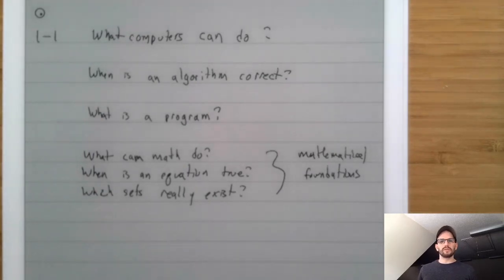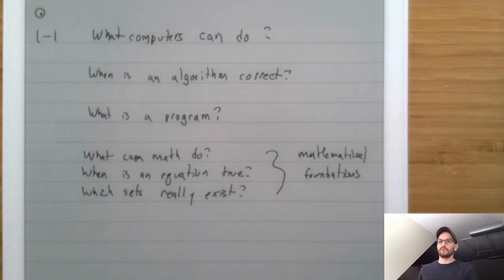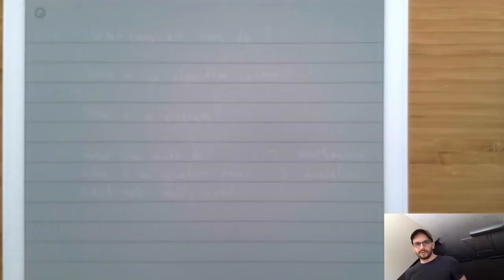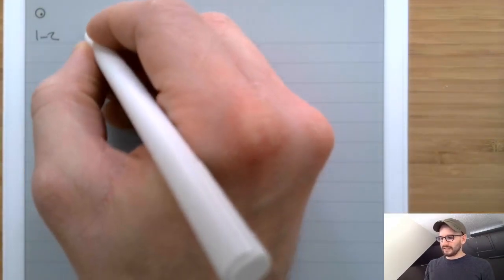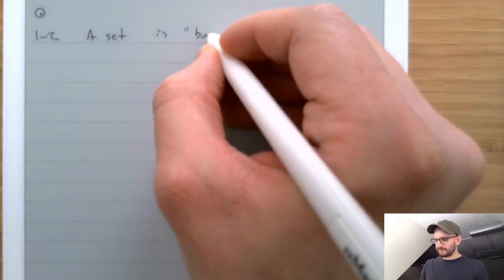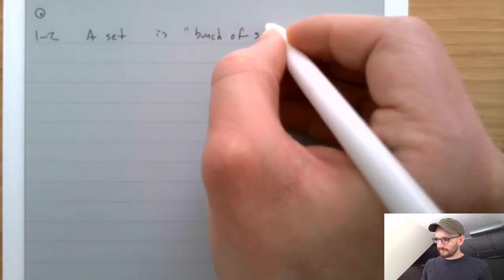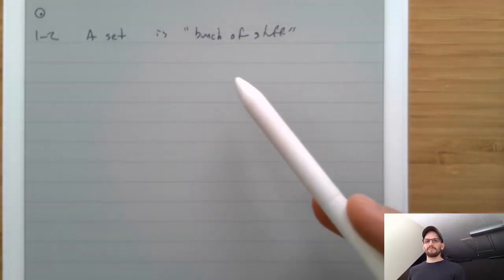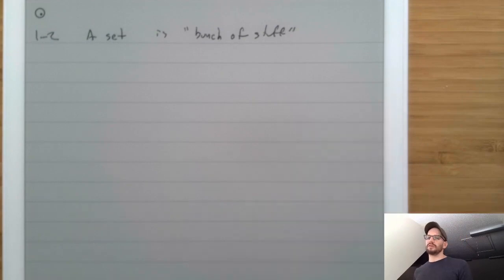Some of this will be review, some of it won't be, but even the stuff that is review I may go over in a slightly different way that appeals more to how we'll be thinking about things in this course. So one of the fundamental things we'll deal with in this class is the idea of a set. A set is a bunch of stuff.